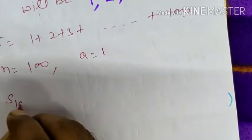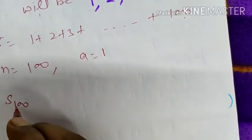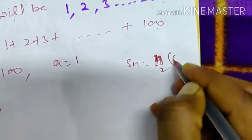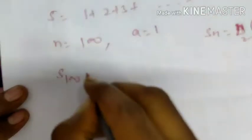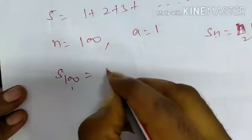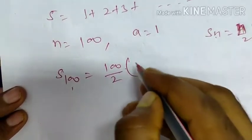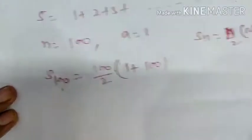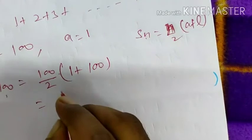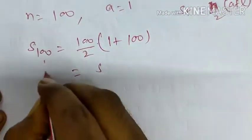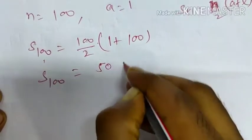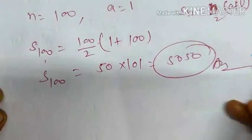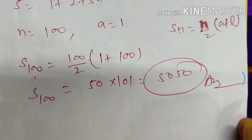So S100 equals n/2(a + l). We can write Sn = n/2(a + l). Here n equals 100, so S100 = 100/2 multiplied by (a is 1 and l is 100). You can solve from here easily: it equals 5050. This is the sum of the first 100 positive integers.